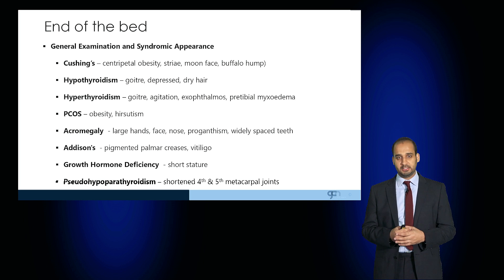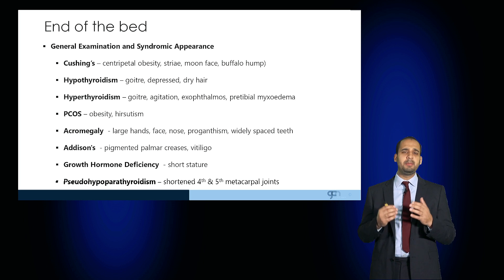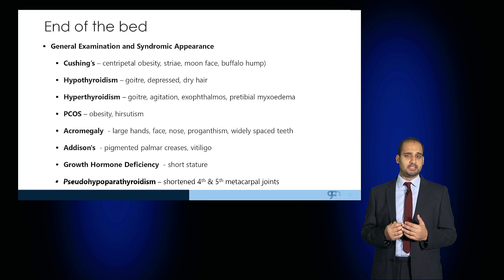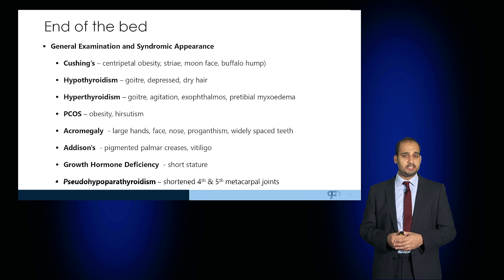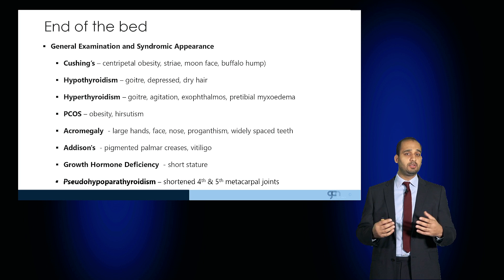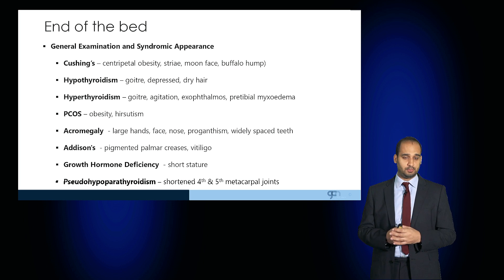Hyperthyroid patients may also have a goiter but may appear agitated with exophthalmos and pretibial myxedema. Patients with polycystic ovarian syndrome may also appear obese and hirsute.